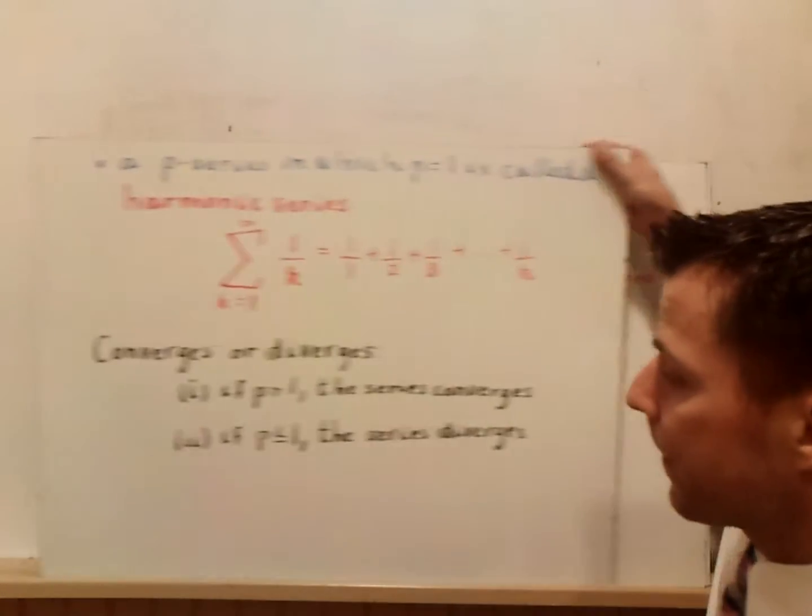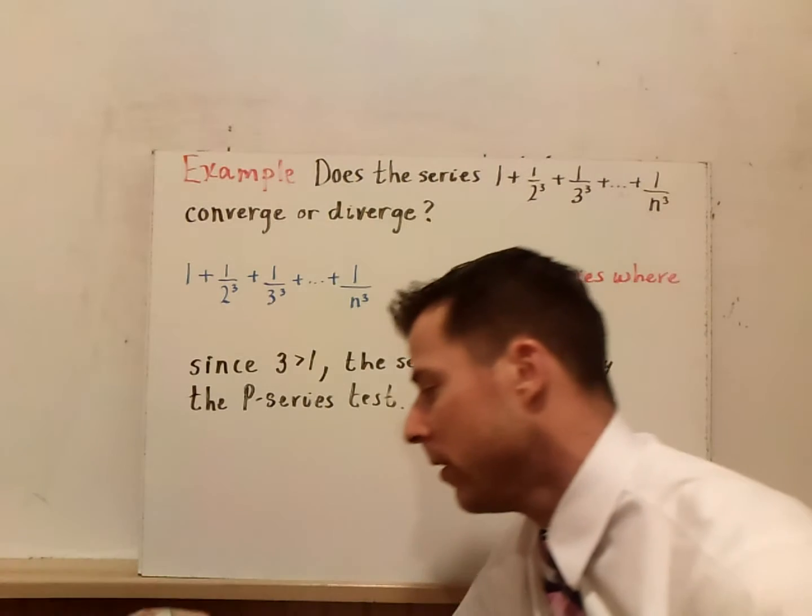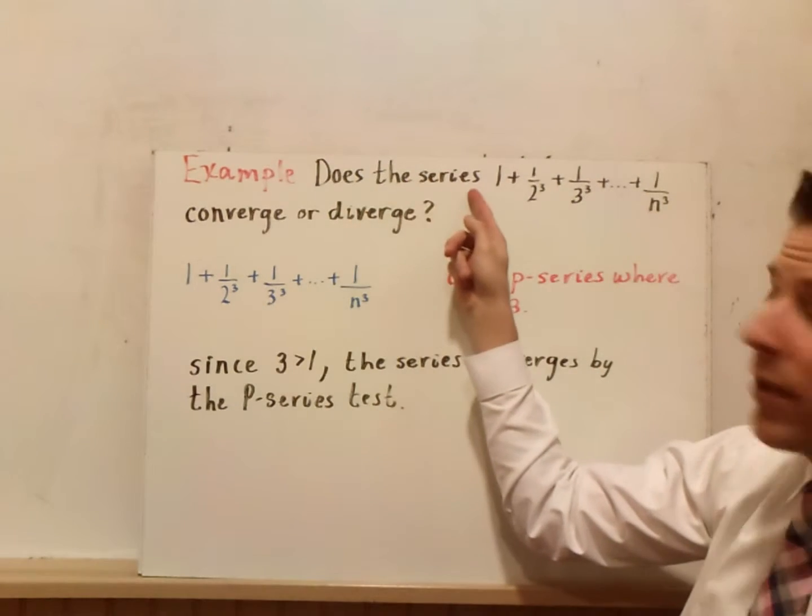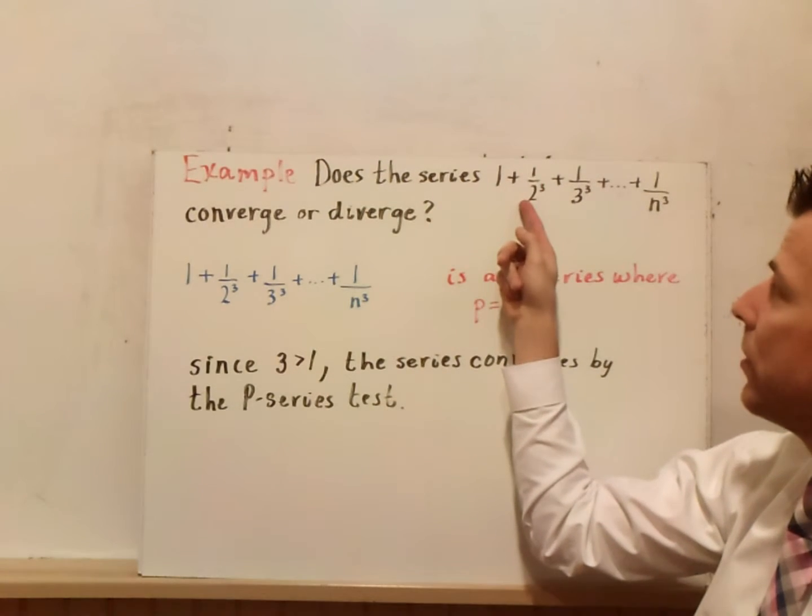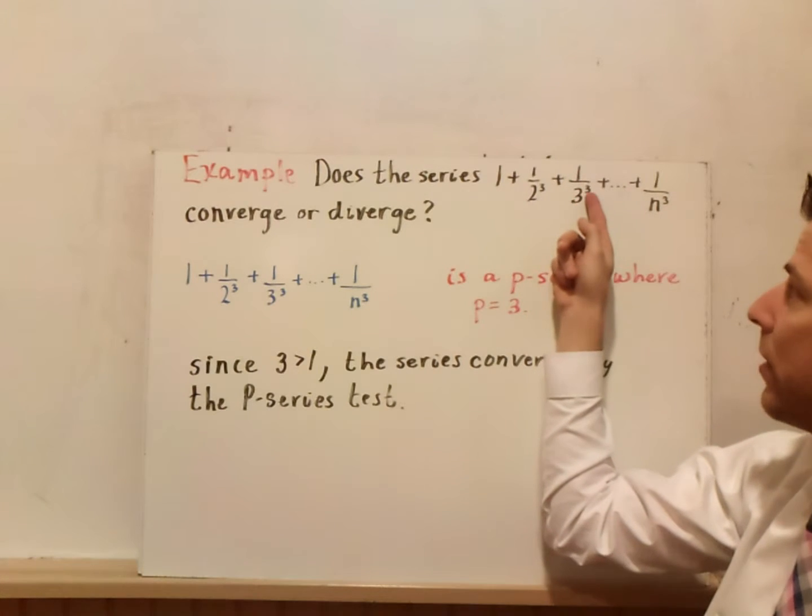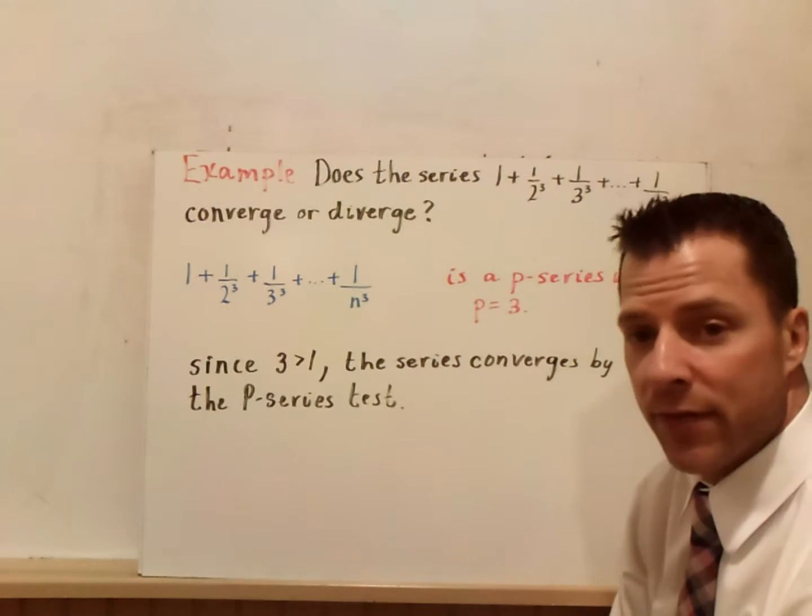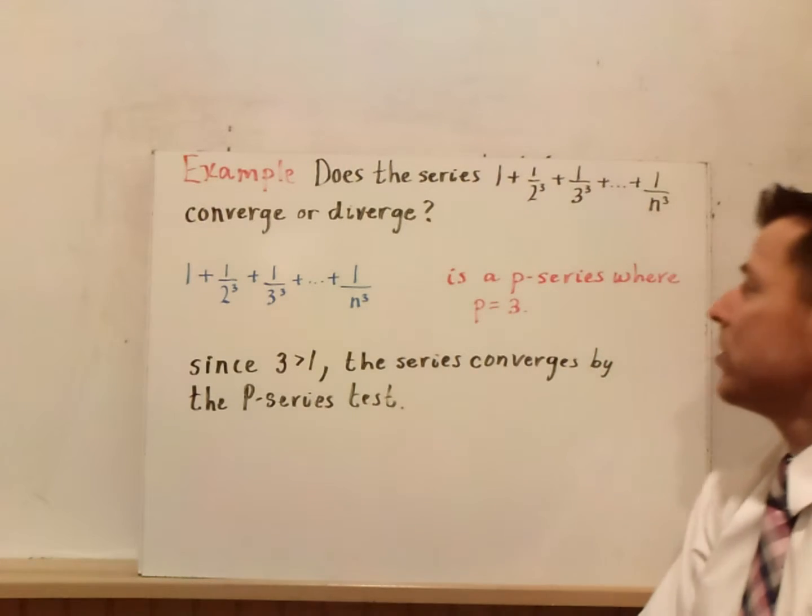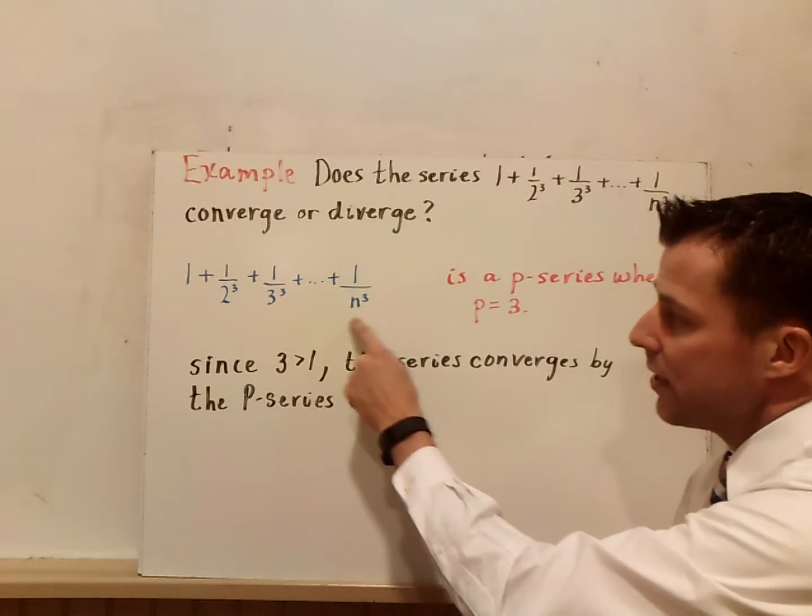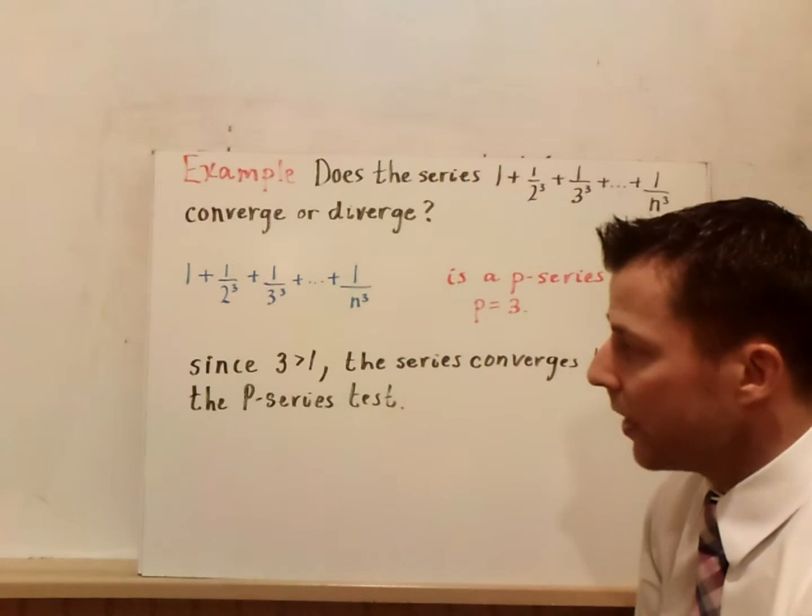Let's look at an example. Does the series 1 plus 1 over 2 to the 3rd power plus 1 over 3 to the 3rd power plus 1 over n to the 3rd power converge or diverge? The idea here is, if you look at the series, the p-value is equal to 3.